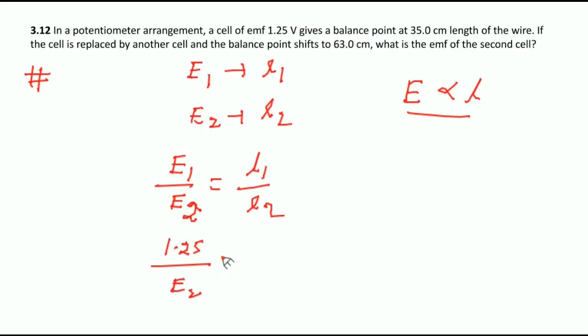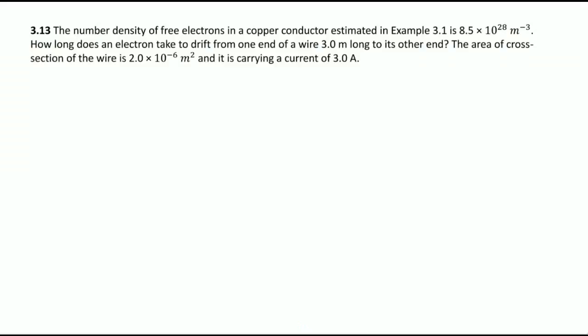E1 is given 1.25 volt, E2 you have to find out. L1 is given 35 centimeter and this is 63 centimeter. So E2 equals 1.25 into 63 divided by 35, that equals 2.25 volt.